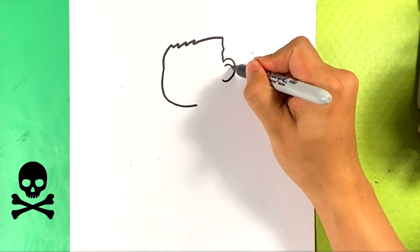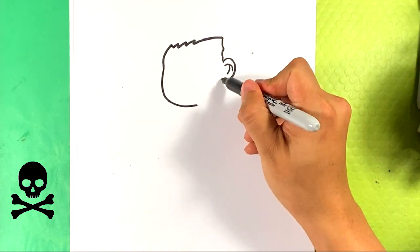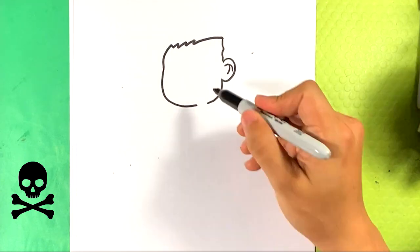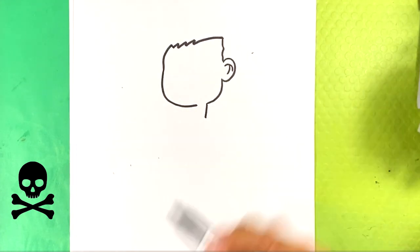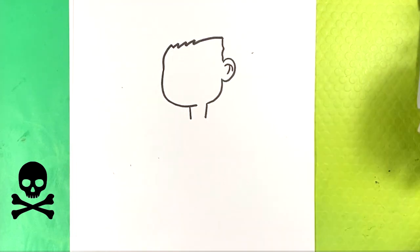Right here we're going to draw a curve inside the ear and another curve coming off of that. Going to go right here. Pull in for the back. Down. The collar. Down here for the collar on the other side. And down here for the far side of the collar.